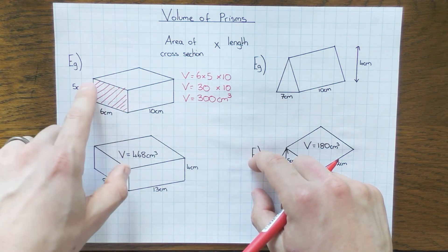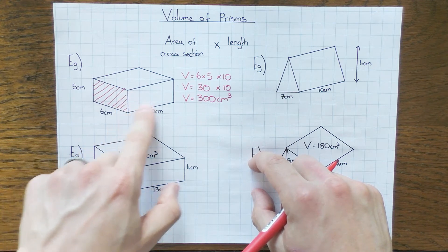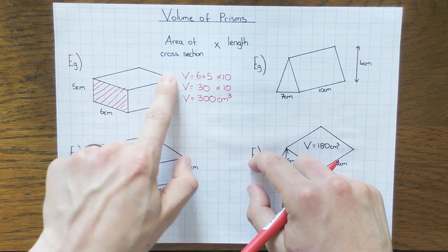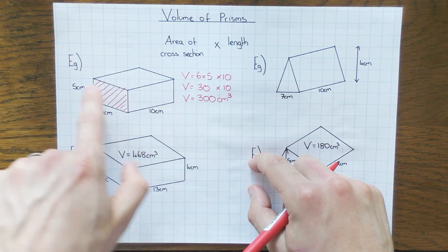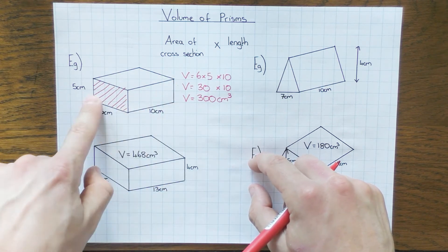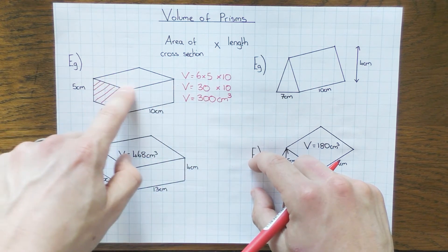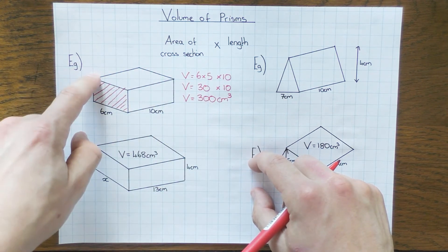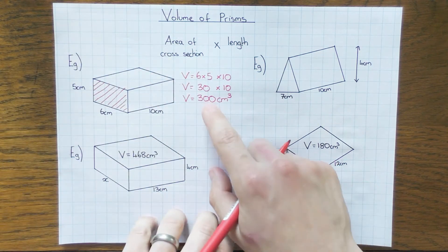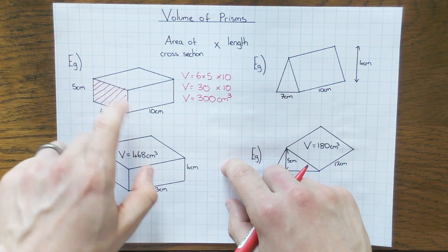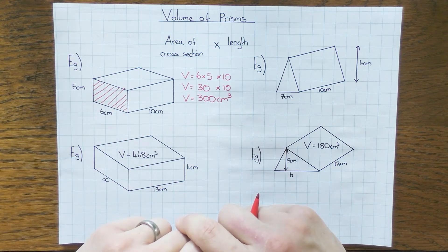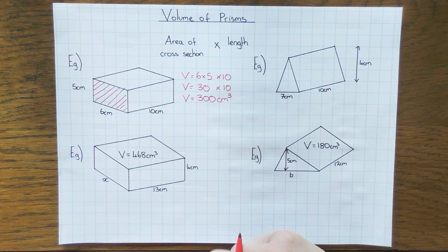Now as I said, with a cuboid there are multiple cross sections. You could have done the area of this rectangle — 10 times 5 is 50, times by 6 also gets you 300. Or you could have used the top and done 6 times 10, which is 60, times by 5, which again gets you 300. But that's the only time you can have that, because a cuboid has those three different cross sections.